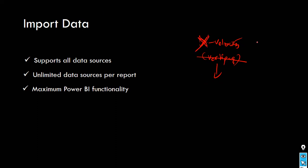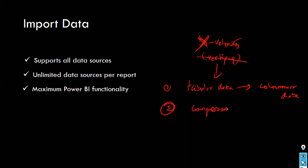When you use import connectivity, the X-Velocity engine starts behind the scenes. It converts your table or data into columnar data, and then compresses the data using different techniques. It then loads this compressed data into memory. The X-Velocity engine carries out three different tasks in the case of import data.